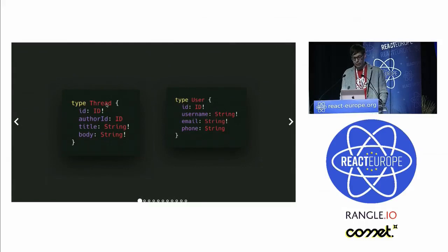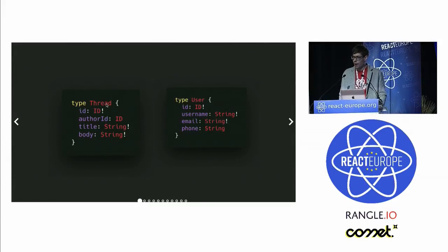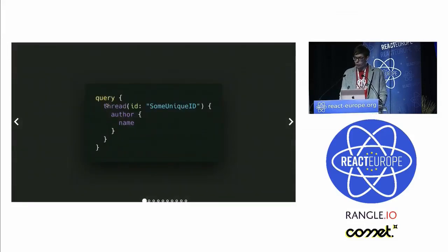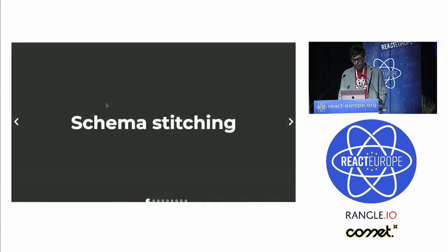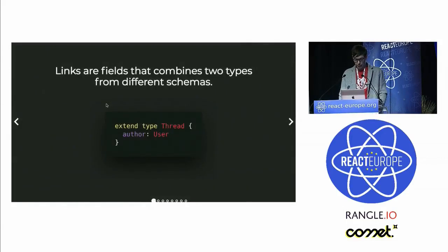Here's our example: we had a type called 'thread' for a discussion thread, and it had a field called 'authorID'. Then in another API we had a type called 'user' with a few typical user fields. We wanted to query the thread by its ID but instead of getting the authorID, we actually wanted the username of the author to show it in the UI.